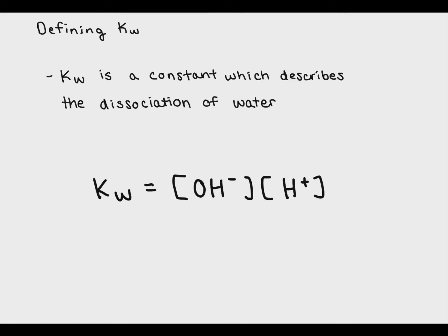If you've watched my video on equilibrium constants, then you know that Kw is a specific type of equilibrium constant. The w stands for water. Kw describes the equilibrium of the dissociation of water.